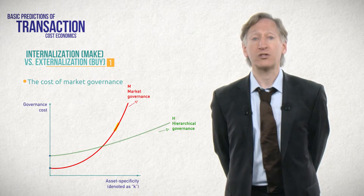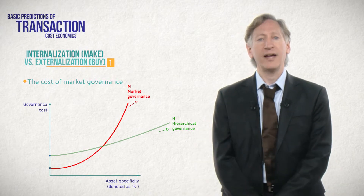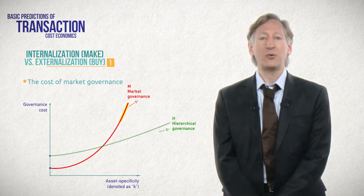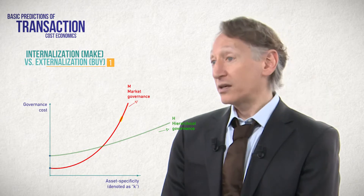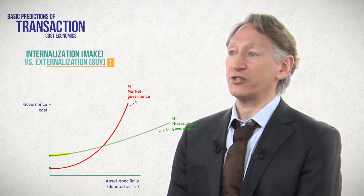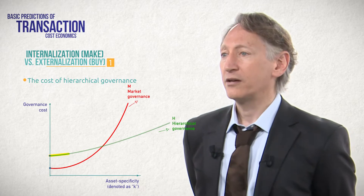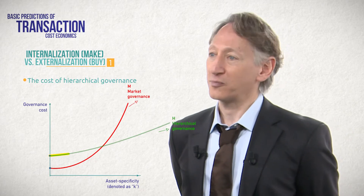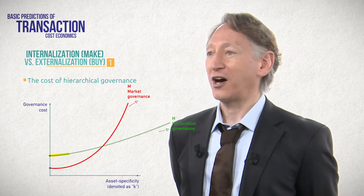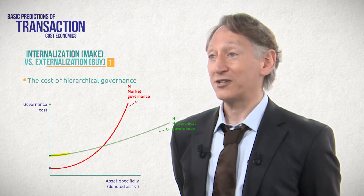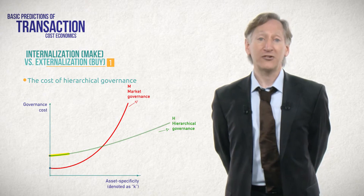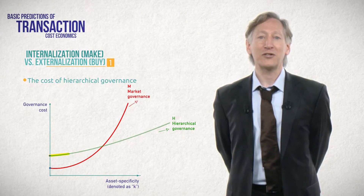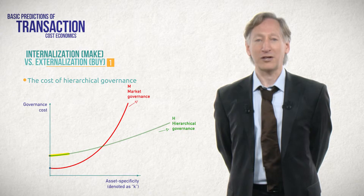And you may have similar costs on your side. At the limit, these costs may be so high that they overwhelm the potential benefit of investing in the specific asset and engaging in the transaction. Now consider an alternative form of governance: vertical integration. Compared to the spot market or a long-term contract, vertical integration has high upfront fixed costs. It's not cheap to buy a supplier or to build one's own supply in-house. So when asset specificity is low, vertical integration is far more costly than market governance.